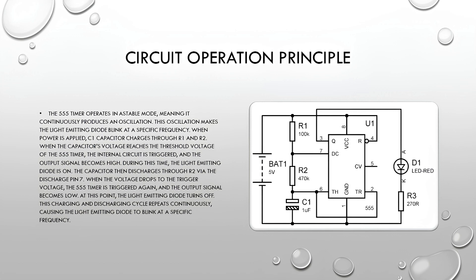Circuit Operation Principle: The 555 timer operates in astable mode, meaning it continuously produces an oscillation. This oscillation makes the light-emitting diode blink at a specific frequency.